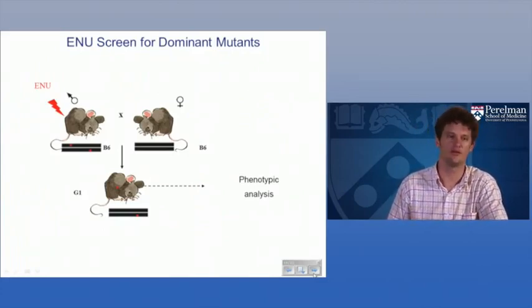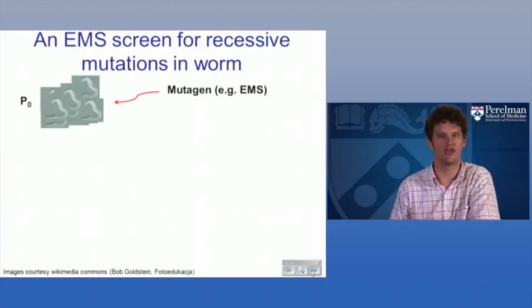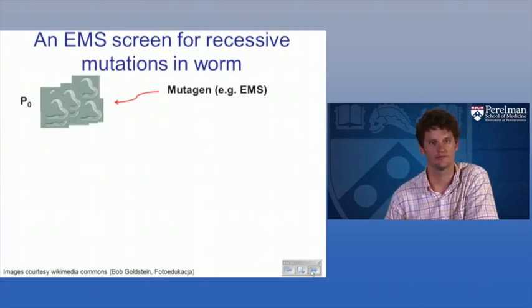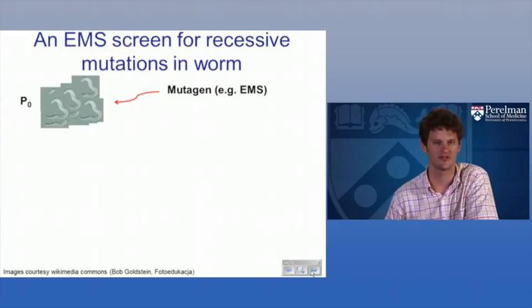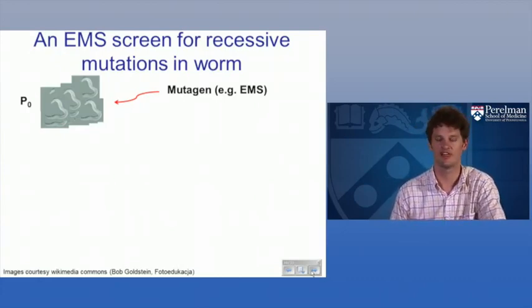If you find something in the dominant screen, you can start doing other crosses to maintain those mice. A recessive mutation screen is much more tricky. I'll go through the simpler version — how we would do it in a worm — since worms have the advantage of being self-fertilizing hermaphrodites. Then we'll go through the more complicated version in mouse.